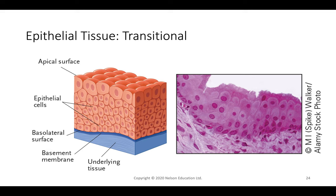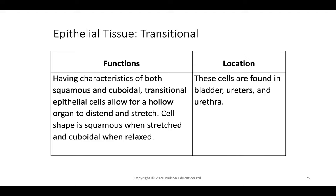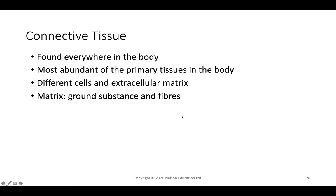Transitional tissue has an apical surface that looks completely different from the bottom layer — typically squamous at the top and cuboidal at the bottom. Transitional epithelial cells allow hollow organs to distend and stretch, as the shape can transition from cuboidal to squamous. This is found in areas like the bladder, ureters, and urethra that need to hold liquid.